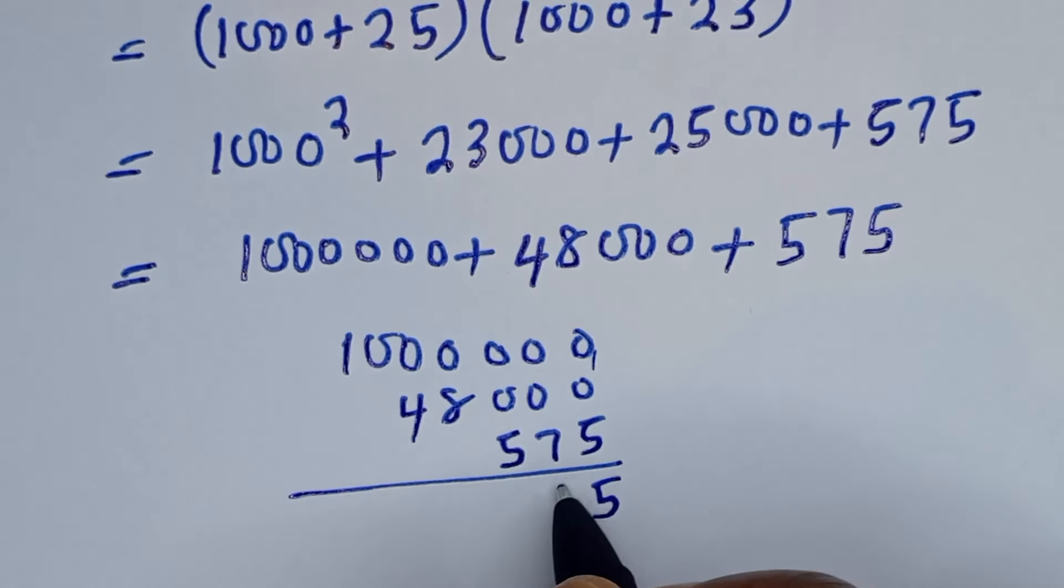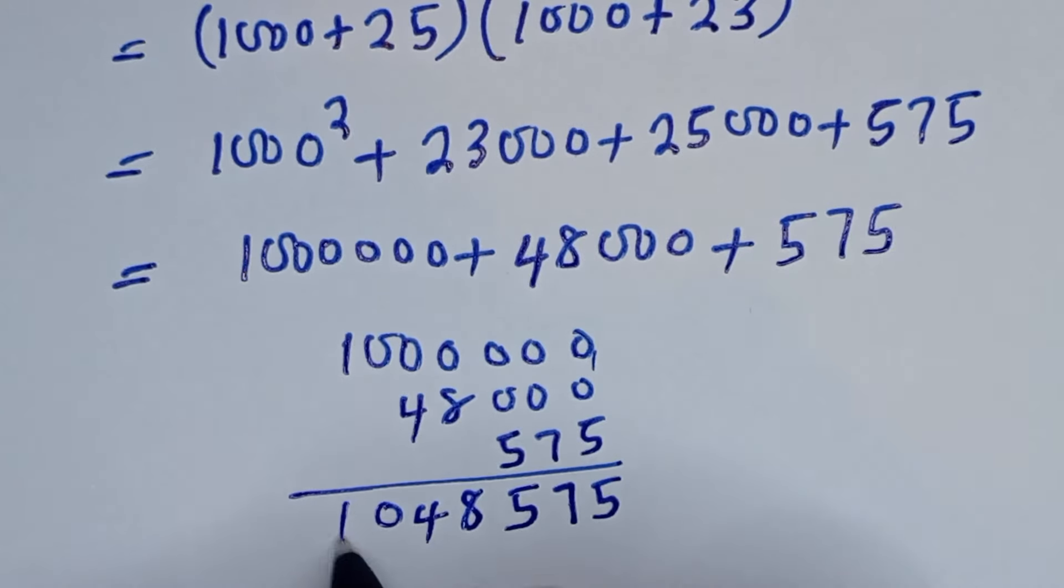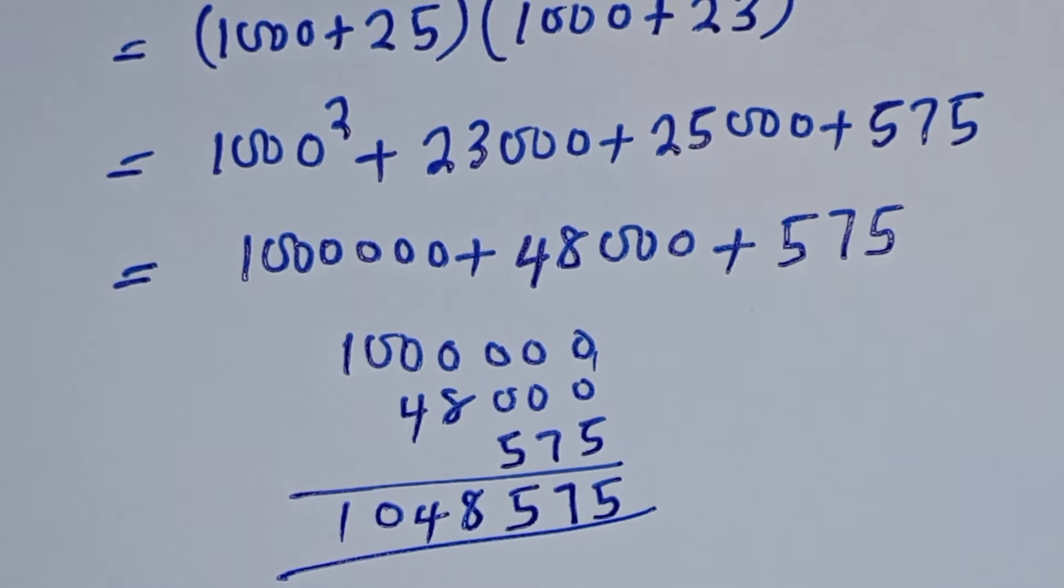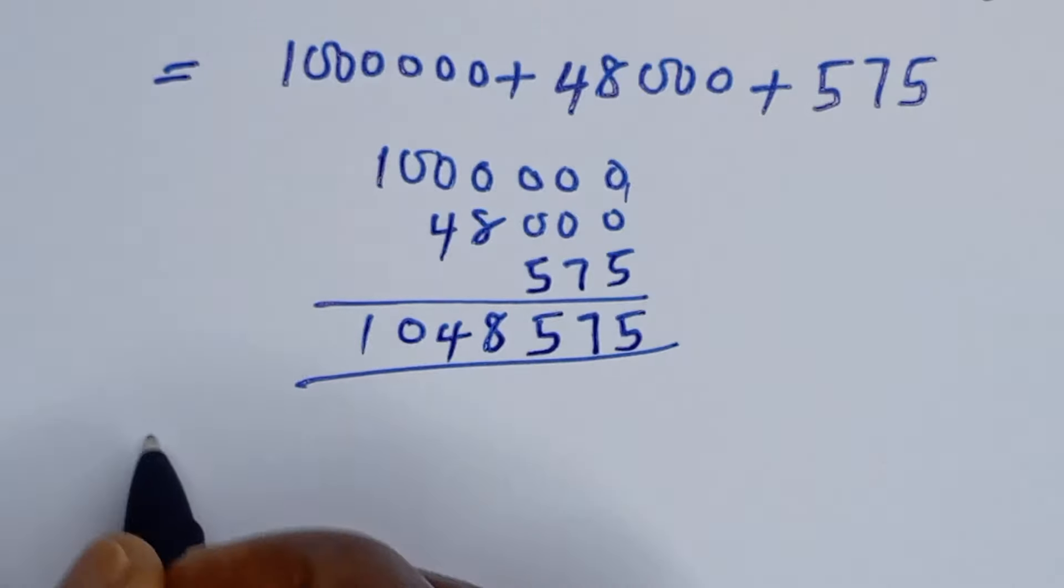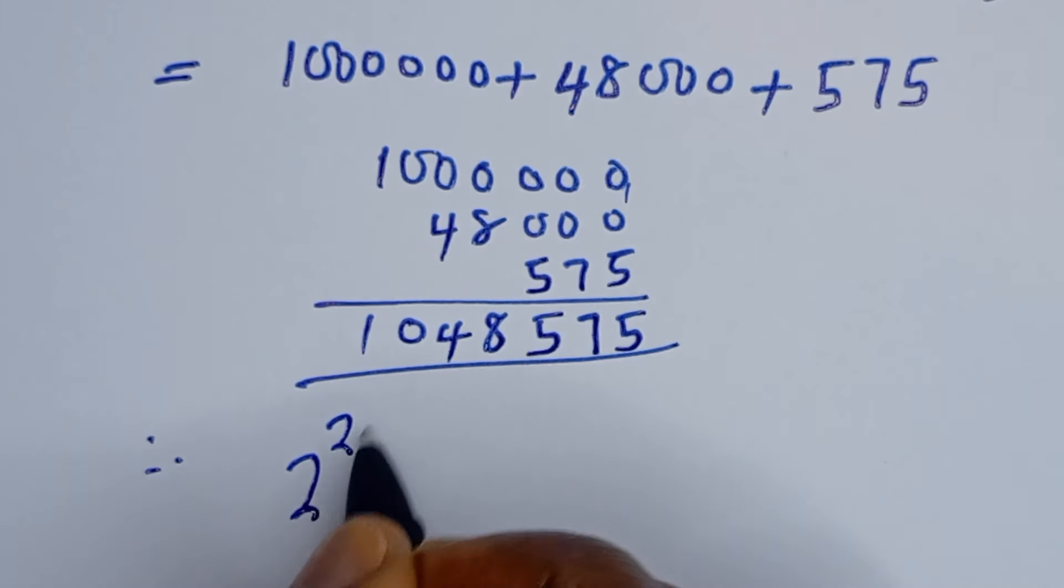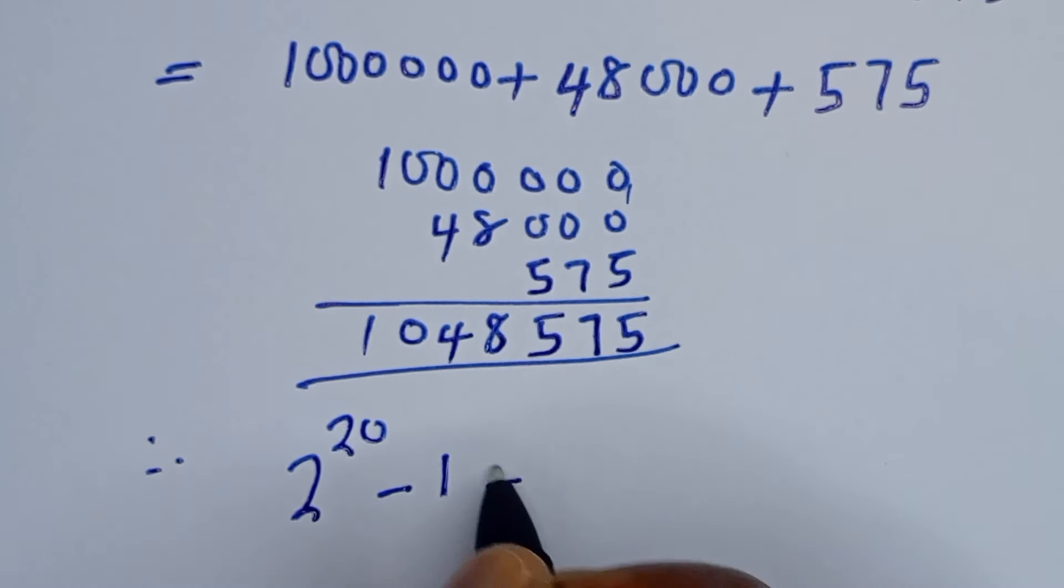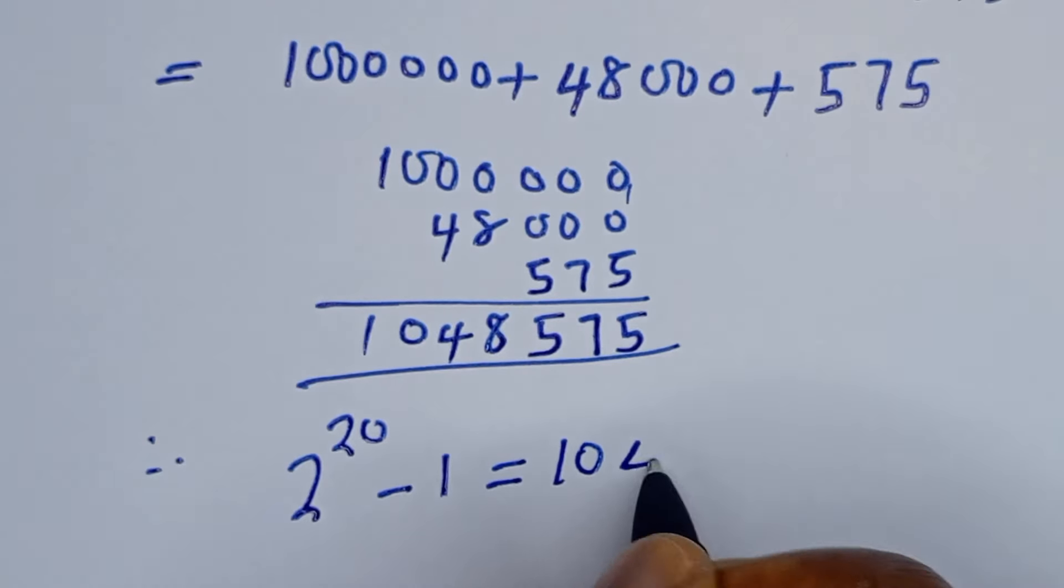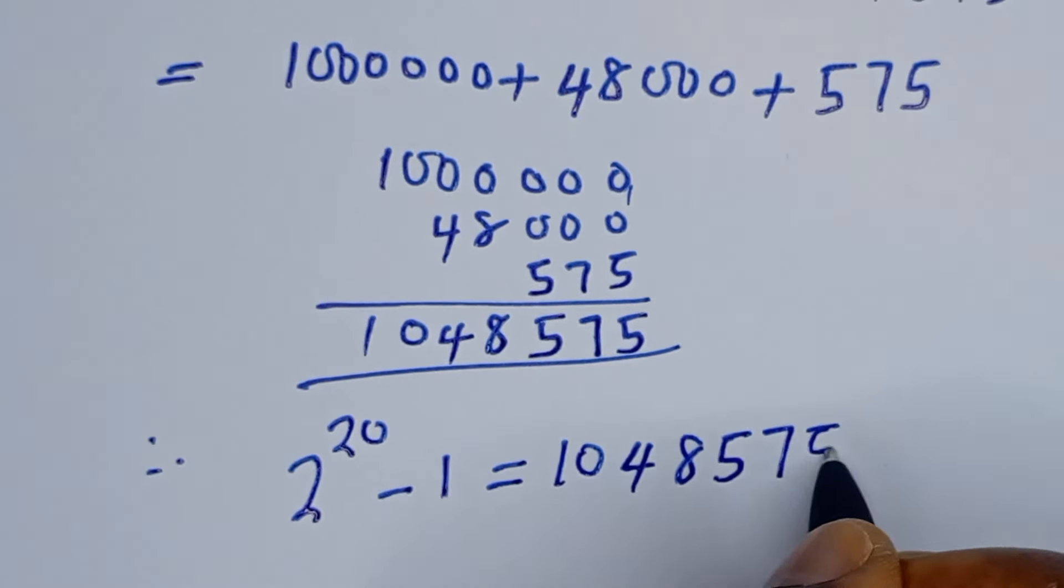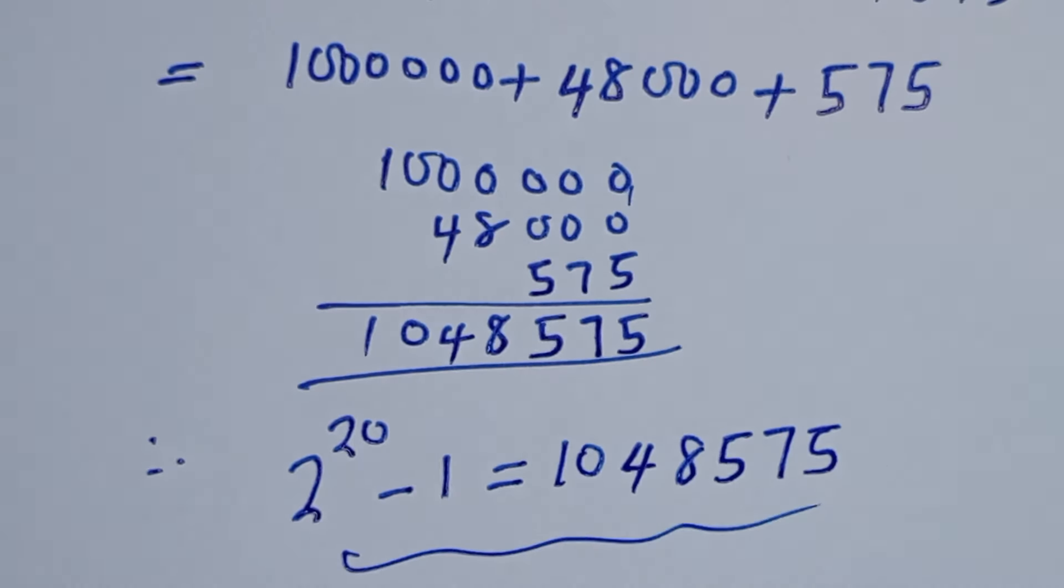This is 75, here is 8, 4, 0, 1. Therefore, 2 to the power of 20 minus 1 is equal to 1,048,575. I hope you enjoyed the video. Please don't forget to like, share, comment, and subscribe to my channel. Thank you, bye bye.